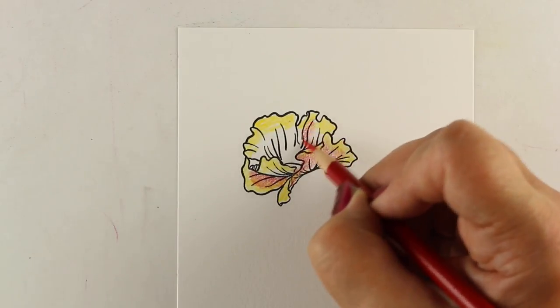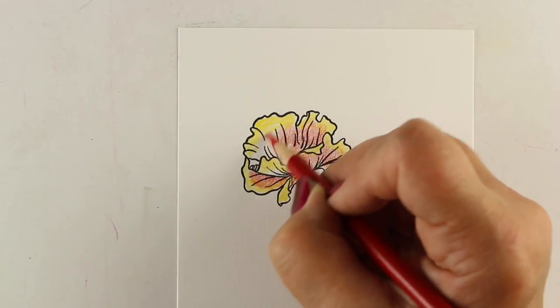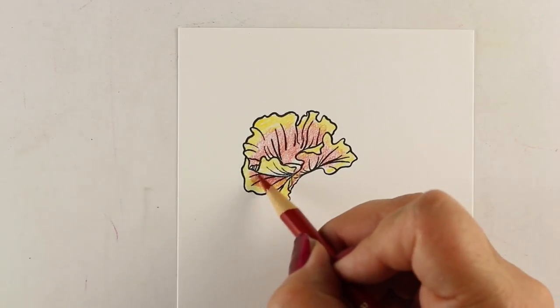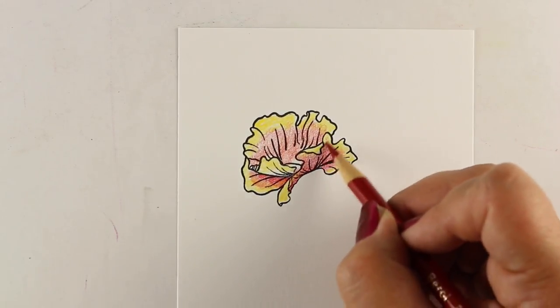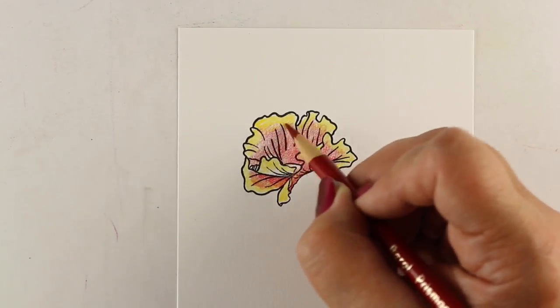I want to try blending a yellow into a red into a darker red, and I want to test both the marker and the blending pencil to see how that works. This was actually my first test of doing it, and you're going to see in real time how this went.